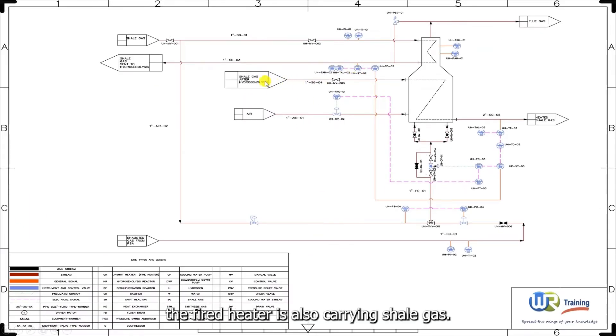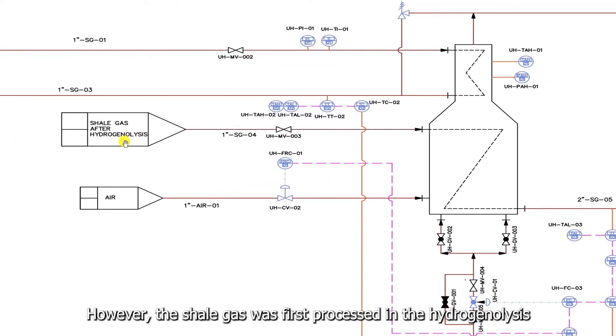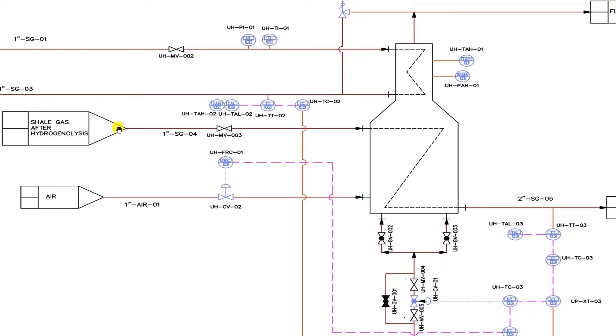The second pipe feeding the fired heater is also carrying shale gas. However, the shale gas was first processed in the hydrogenolysis. So we can assume from this piping and instrumentation diagram that the hydrogenolysis process is carried out in two steps. Each step requires preheating the shale gas feed.